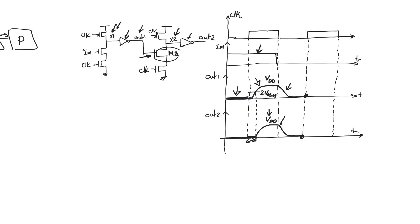During the second evaluate phase, input-one is also equal to zero volts. This causes X1 to remain at VDD in a high-impedance state. Out-one remains at zero volts because X1 is remaining at VDD. But out-one at zero volts comes from low impedance.